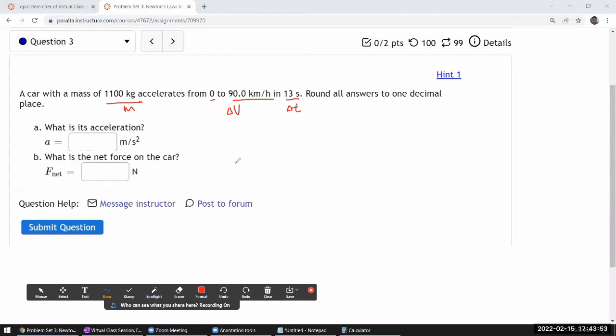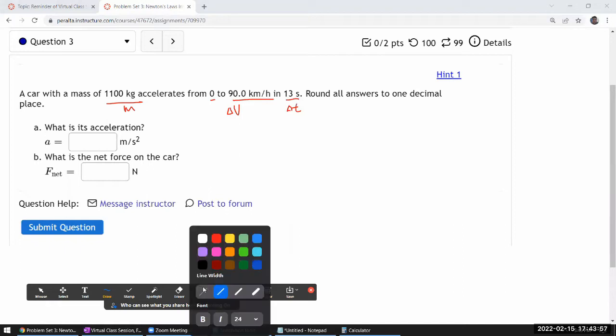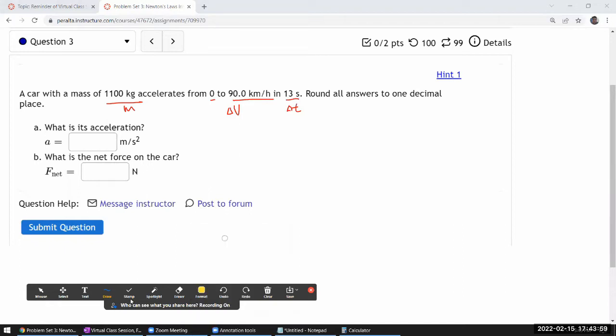So this is a kind of reading check question because you are looking at this information that's given: mass, velocity or change of velocity, and time. I guess they're even going in the order so from the information here you can say that my acceleration is equal to